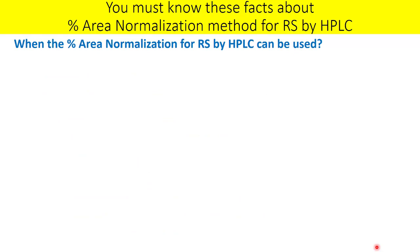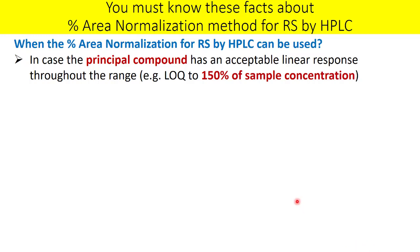Percent area normalization for related substances can be used if the principal compound has an acceptable linear response throughout the entire range from its LOQ to 150% of the sample concentration. The phrase '150% of the sample concentration' is very important.